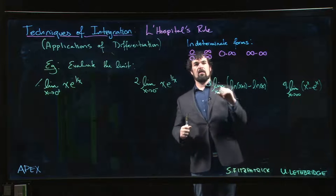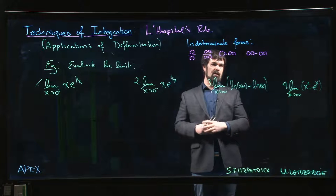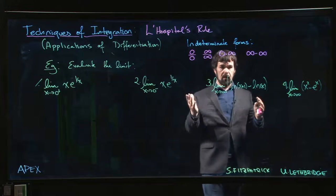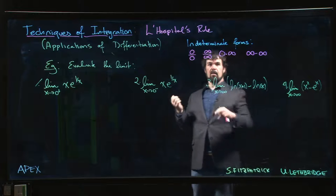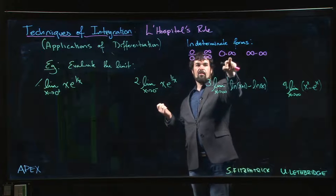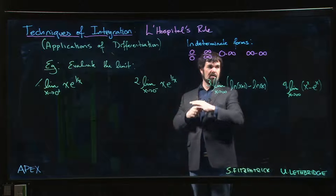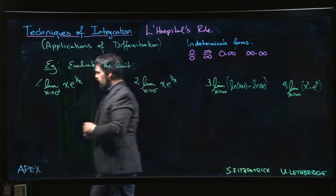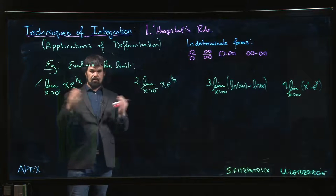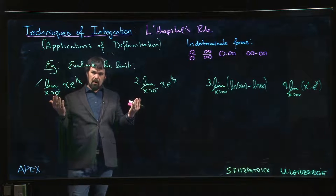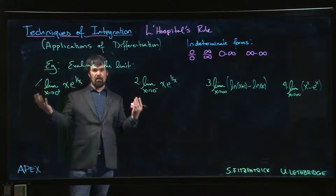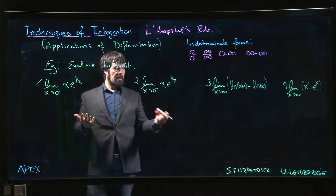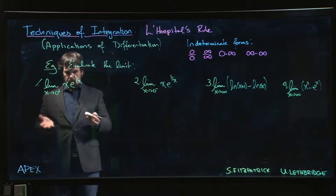Now we're going to look at 0 times infinity and infinity minus infinity. These don't really have answers either, because with 0 times infinity, you've got to figure out what's going to win — is one going to 0 faster than the other is going to infinity, or is there some balance? Same thing with infinity minus infinity: if both functions are going to infinity, the first might be growing much faster than the other, and the difference is not necessarily 0. It might be infinite, or it might be some finite value.